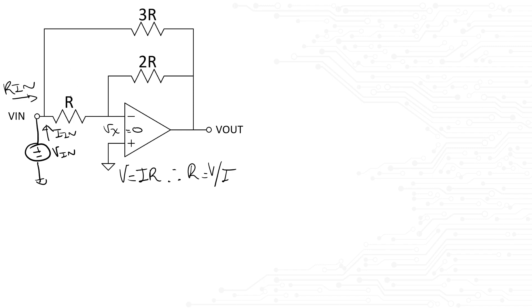So we can write the equations for the current leaving the test source as I1 equals Vin minus 0 divided by R and I2 equals Vin minus Vout divided by 3R. The total current leaving the source of course is I1 plus I2.